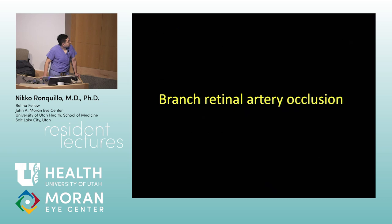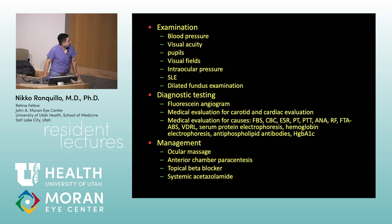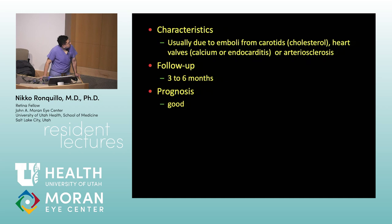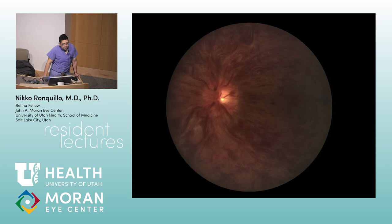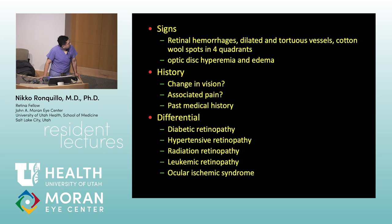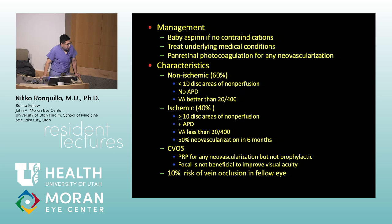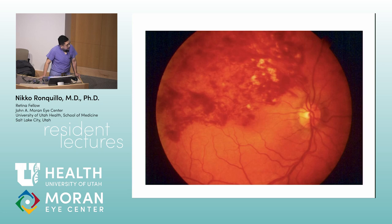Next — BRAO. Very similar to CRAO in terms of workup questions. For BRAO, remember emboli from carotids, heart valves — calcium or arteriosclerosis. Next — CRVO, the 'blood and thunder' fundus. Clinically, distinguish non-ischemic versus ischemic forms via FA. If neovascularization develops, perform PRP.